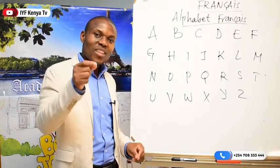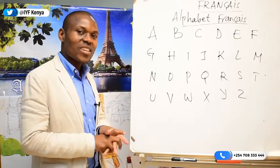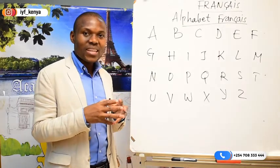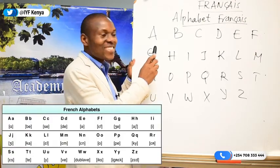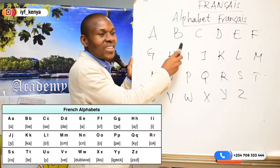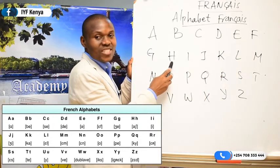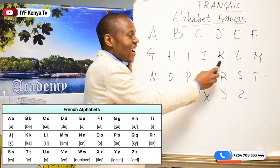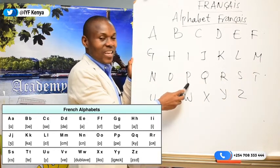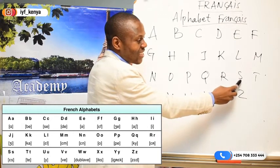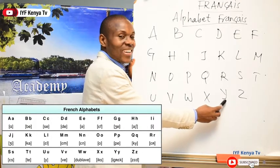In the alphabet français, I'm very sure that you wrote that in your book. Let us revise together again for one minute before we go to the next lesson. So we have: A, B, C, D, E, F, G, H, I, J, K, L, M, N, O, P, Q, R, S, T, U, V, W, X, Y, Z.